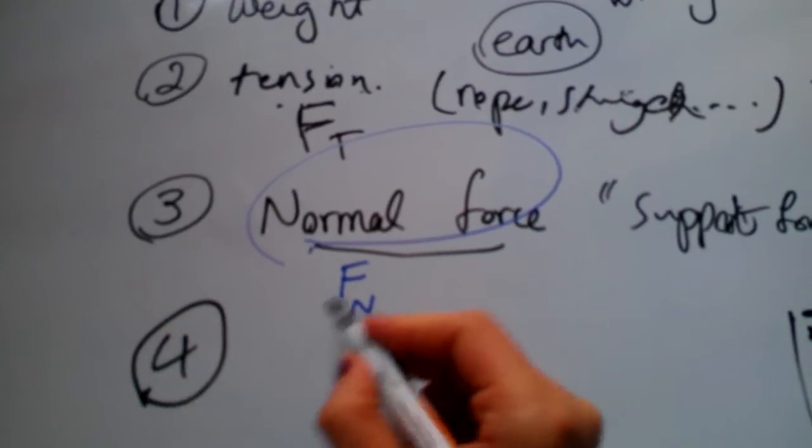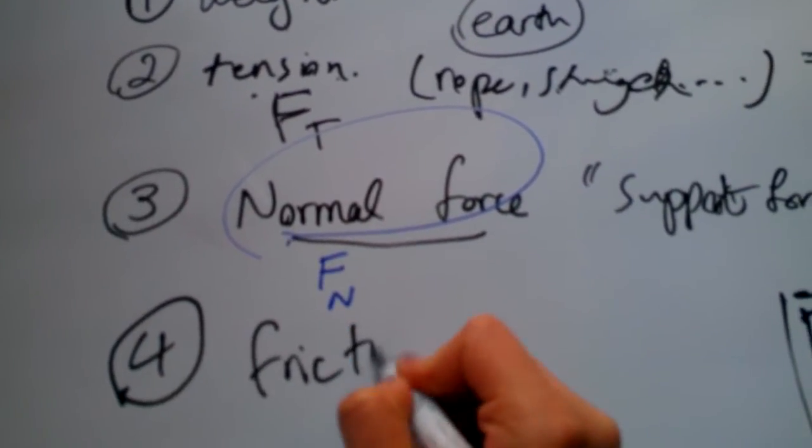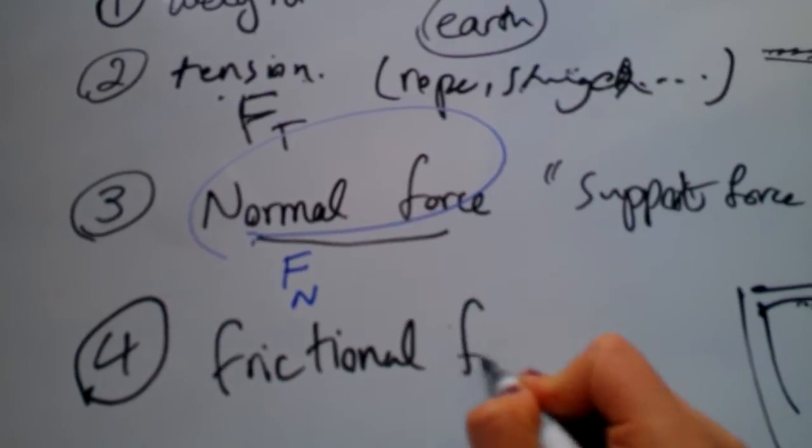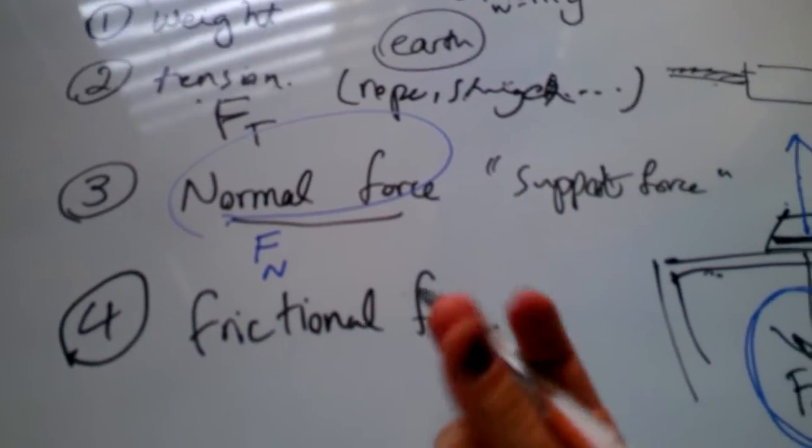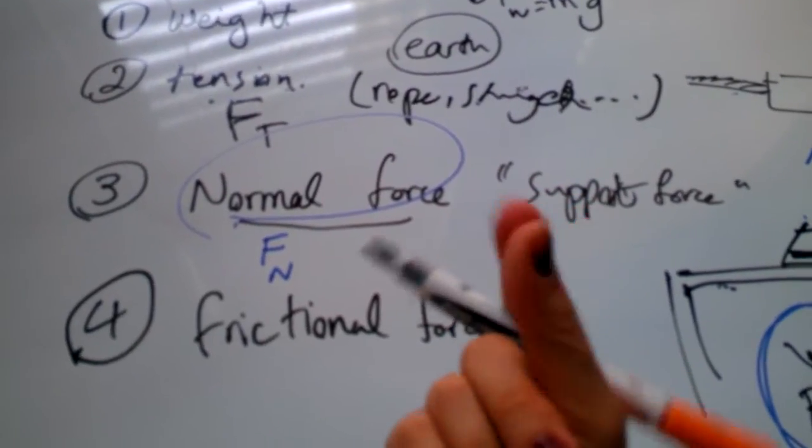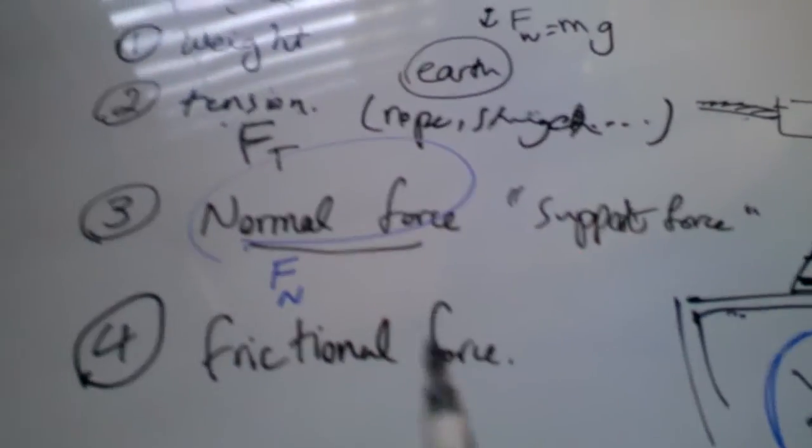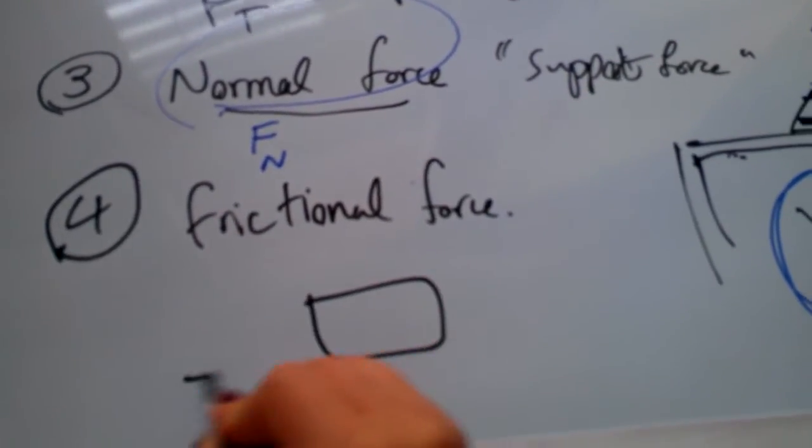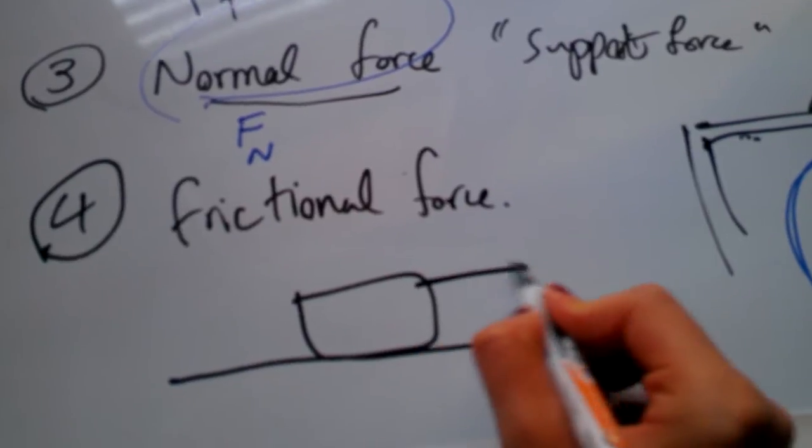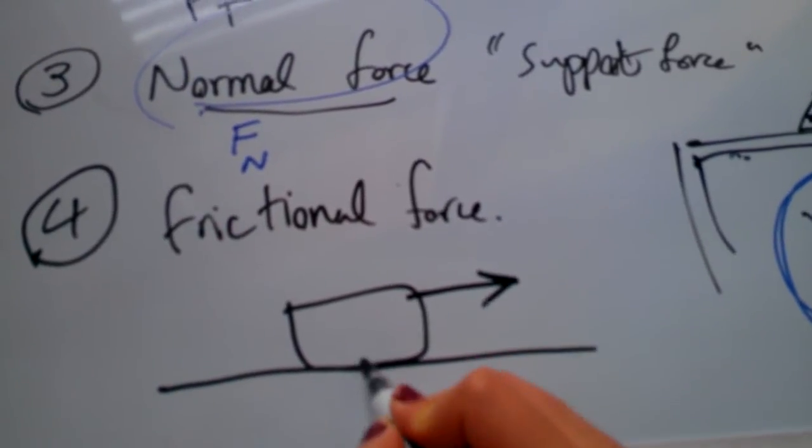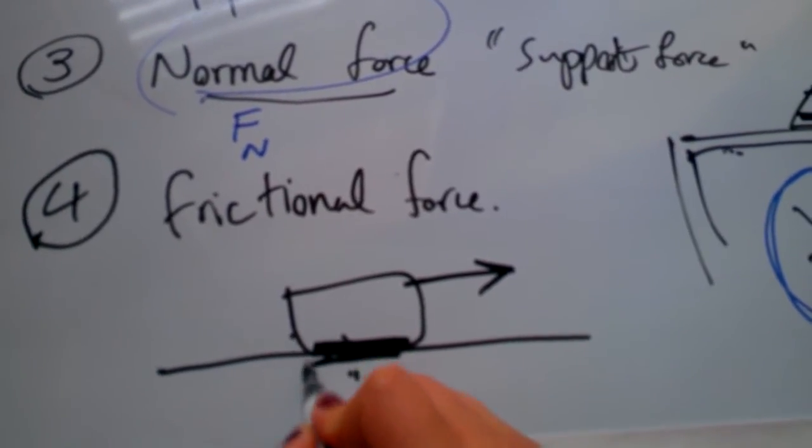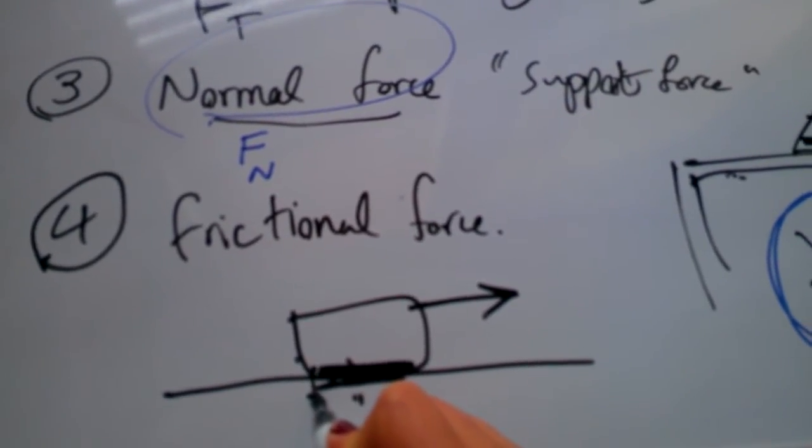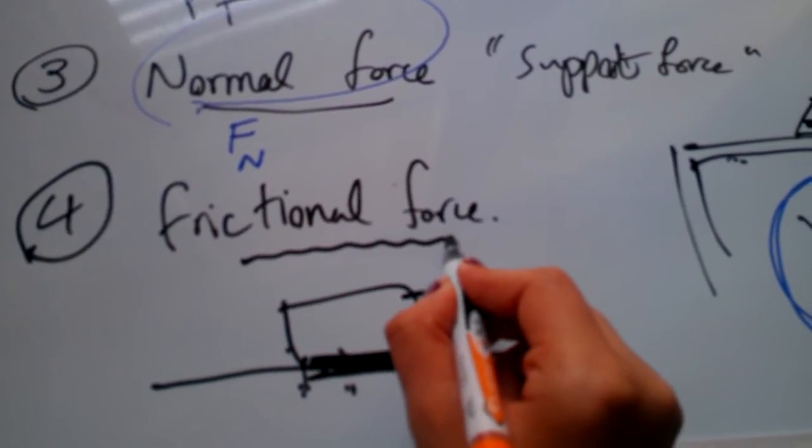Fourth force is frictional force. Frictional force comes into play whenever two surfaces are in direct contact with one another. If there is this box here on the floor, and I'm trying to pull the box this way, because of the two surfaces that are in direct contact with one another, there is always a frictional force going on.